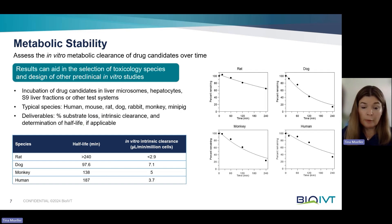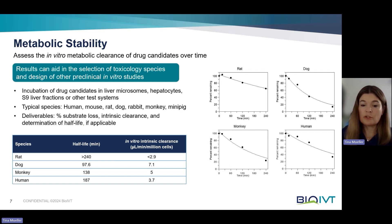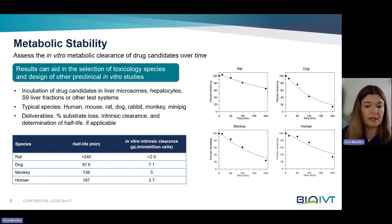The deliverables are the percent substrate loss — as you can see in the graphs on the right — and the calculated intrinsic clearance, as well as the determination of the half-life, as seen in the table at the bottom.